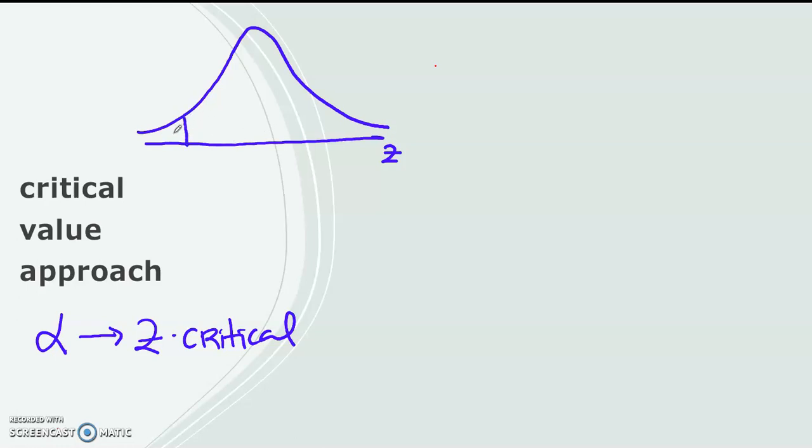So for example, we are doing the one tail left tail test. This is the area of the alpha, which is the rejection area.